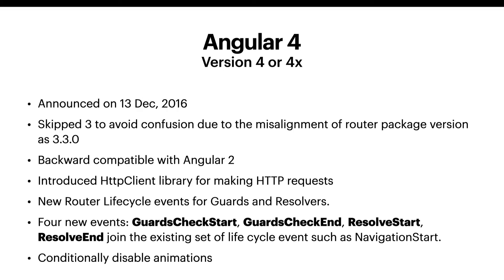Angular 4 was announced on December 23, 2016. The main reason Google skipped Angular 3 was that the router package version 3.3.0 had already been released with Angular 2, so to remove confusion among users Google decided to skip version 3 and go directly to Angular 4.